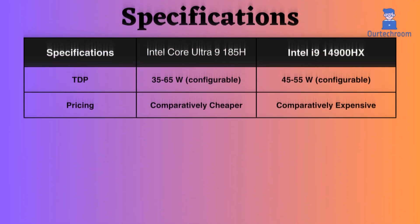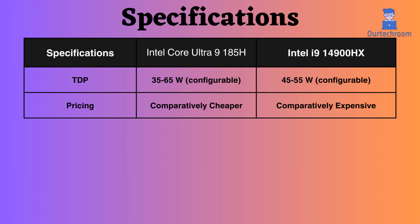The TDP of both processors is configurable. The 35–65W range of the Ultra 9 offers greater versatility, providing a wider spectrum of power efficiency and performance with slightly better power efficiency. The 45–55W range of the Intel i9 leans towards prioritizing sustained performance with a higher baseline power draw.